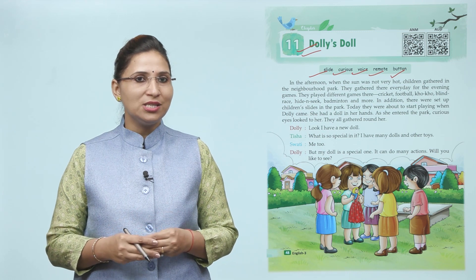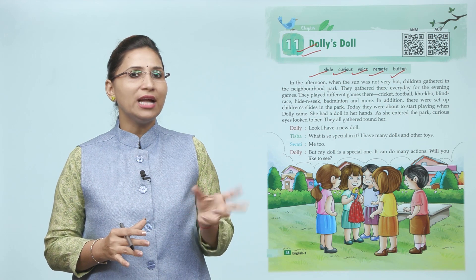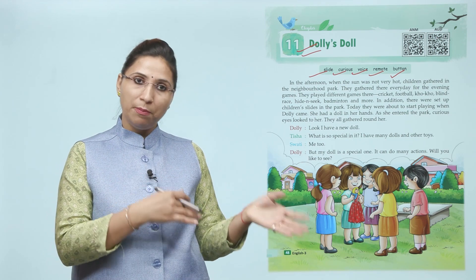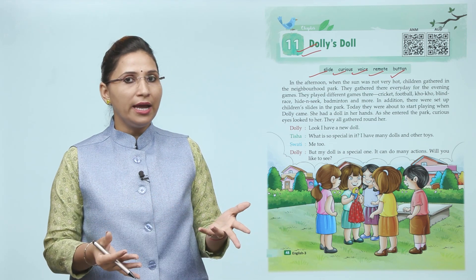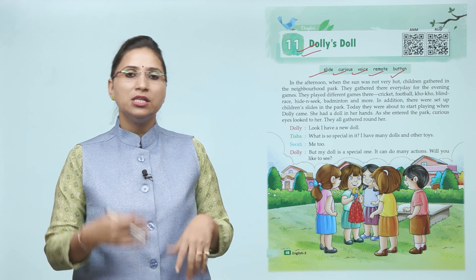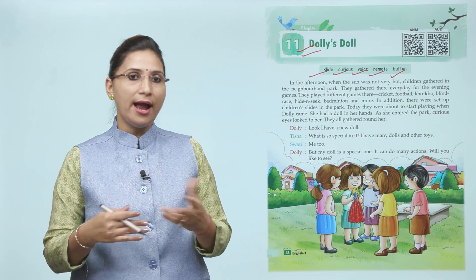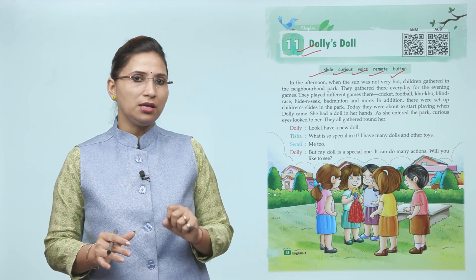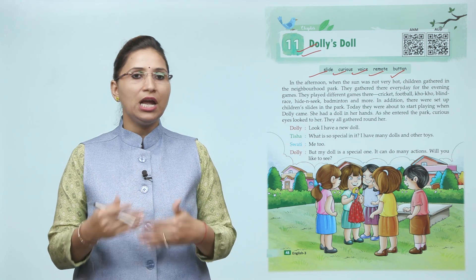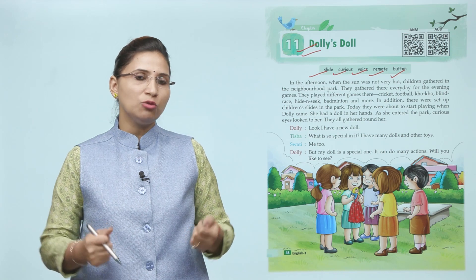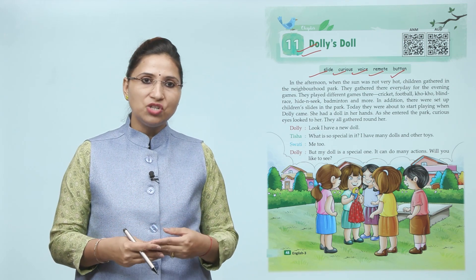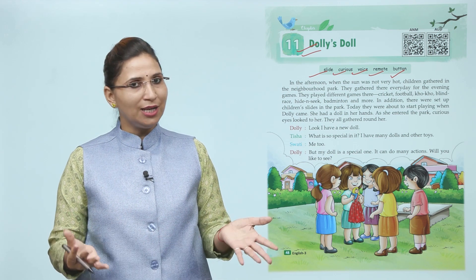Yahan pe jo story start ho rahi hai bachy, ye story start ho rahi hai afternoon mein, jab sanjo hota hai, wo zyada hot nahi hota, toh bachy ikatthe ho jate hain khelne ke liye jo neighborhood park ke aas paas hoti hai. Wahan par ikatthe ho jate hain taaki wo game khel paayein evening mein. Aur wo game cricket, football, cocoa, blind race, hide and seek, badminton aur bhi bahut game khelte hain. Wahan par children's slides bhi hain park ke andar. Aur aaj jaise hi wo khelne wale the, toh Dolly aayi apni doll ke saath. Uske haath mein doll thi, aur jaise hi wo park mein enter karti hai, toh curious bhari aankhein unhe dekhne lagti hain, aur sab wahan par ikatthe ho jate hain.